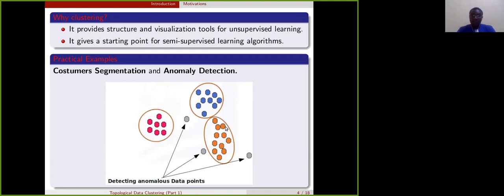Moreover, clustering analysis is also useful in anomaly detection. For example, let's say that you are dealing with gene expression data. When you cluster our data, you can automatically detect a gene expression that has cancer. For example, here we have detected anomalous data points.